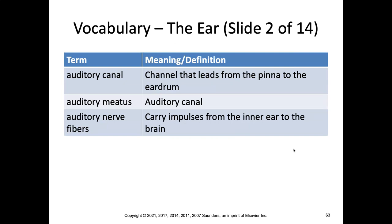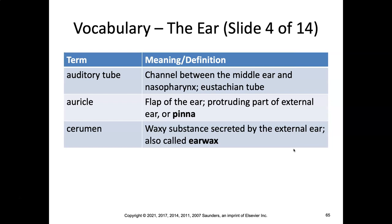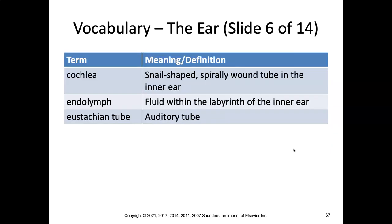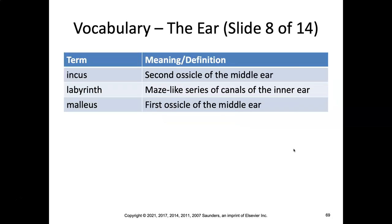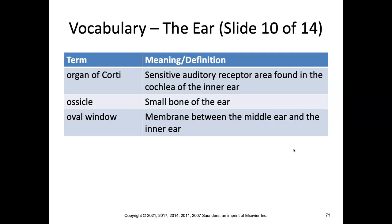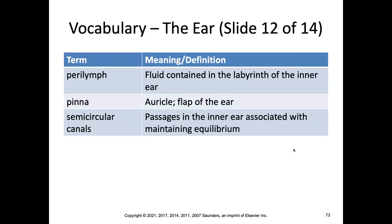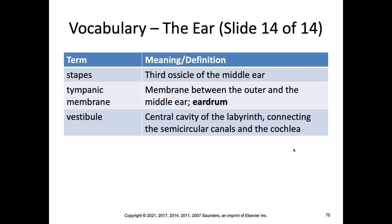Some ear terms to know: auditory canal, auditory meatus, auditory nerve fibers, auditory tube, auricle, cerumen (earwax), cochlea, endolymph, eustachian tube, incus, labyrinth, malleus, organ of Corti, ossicle, oval window, perilymph, pinna, semicircular canals, stapes, tympanic membrane, and vestibule.